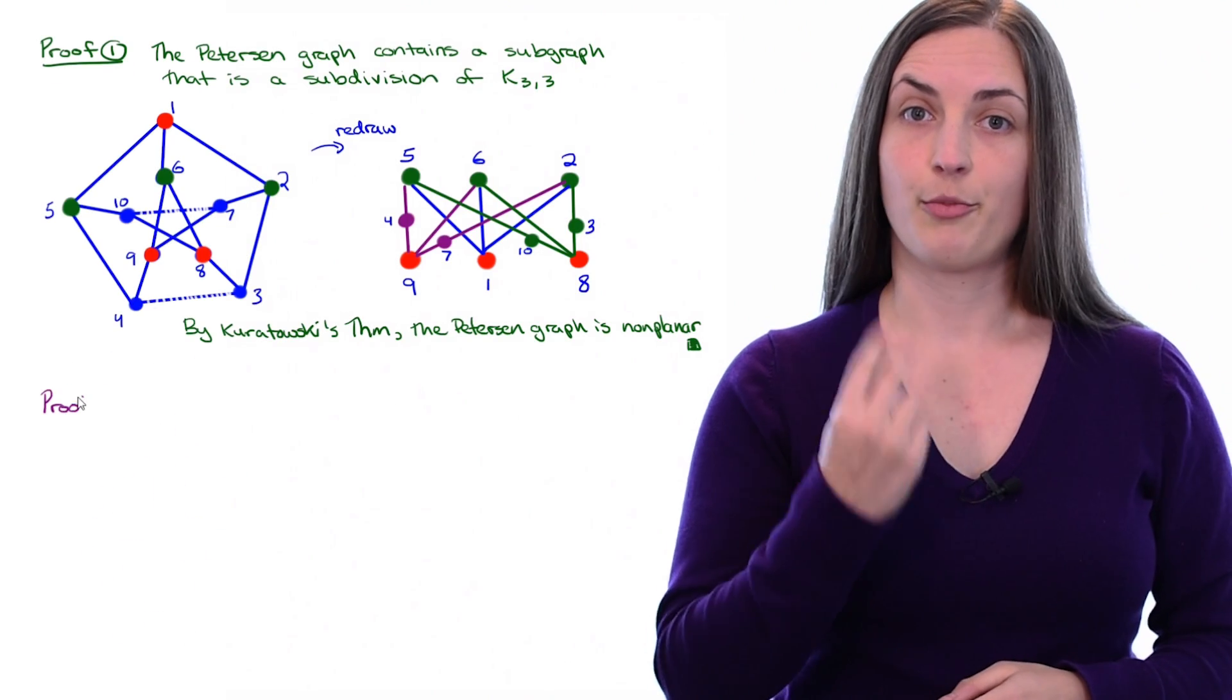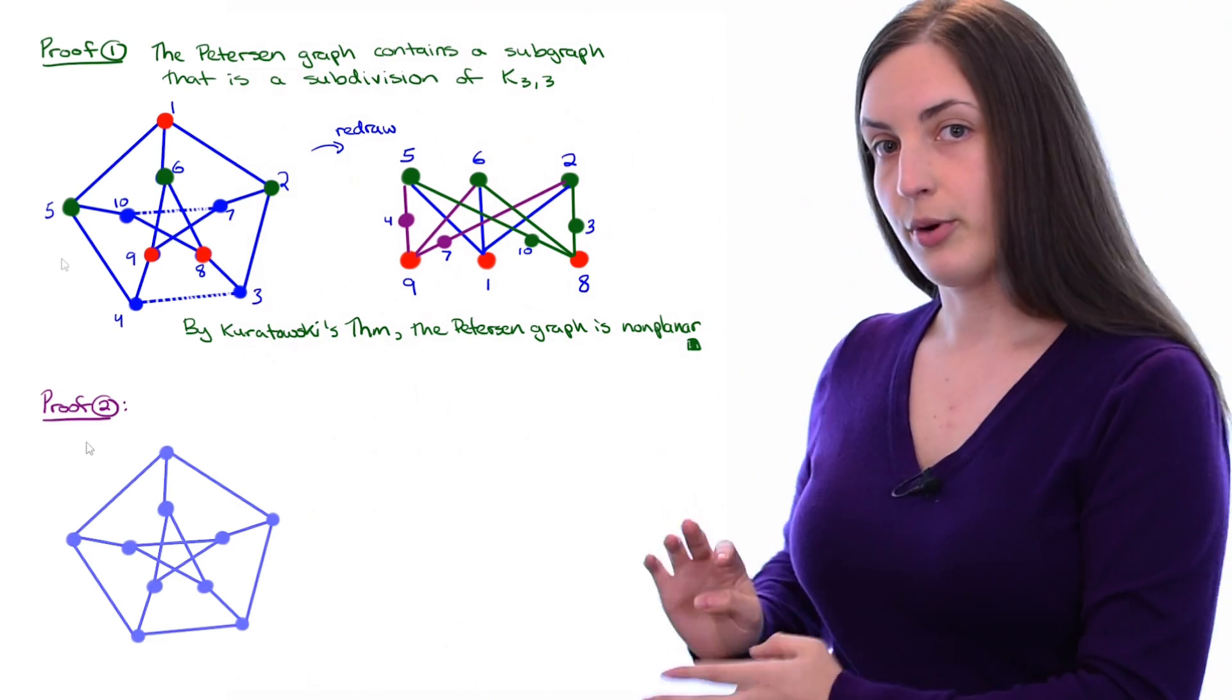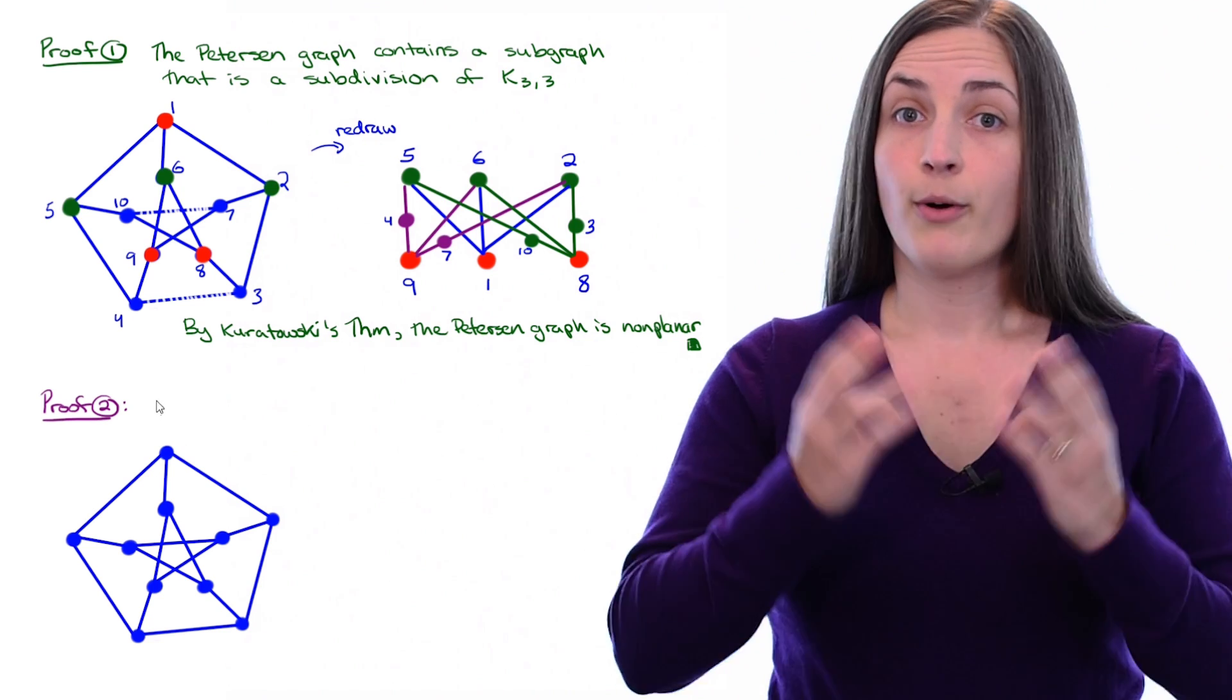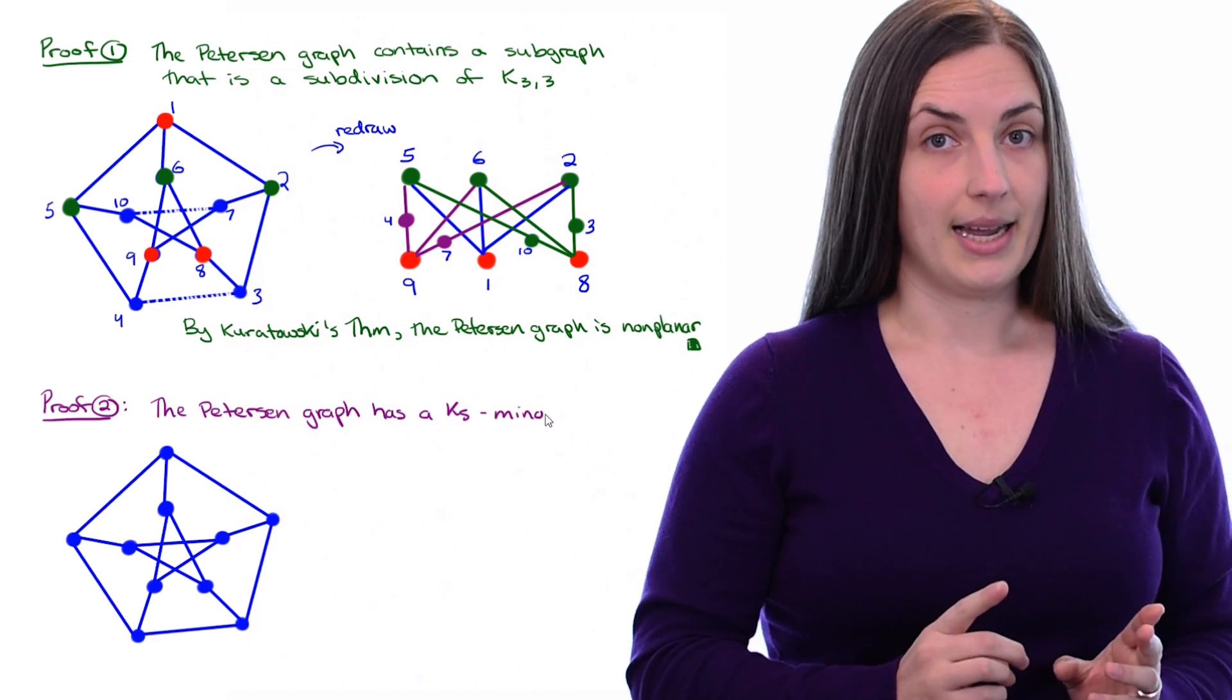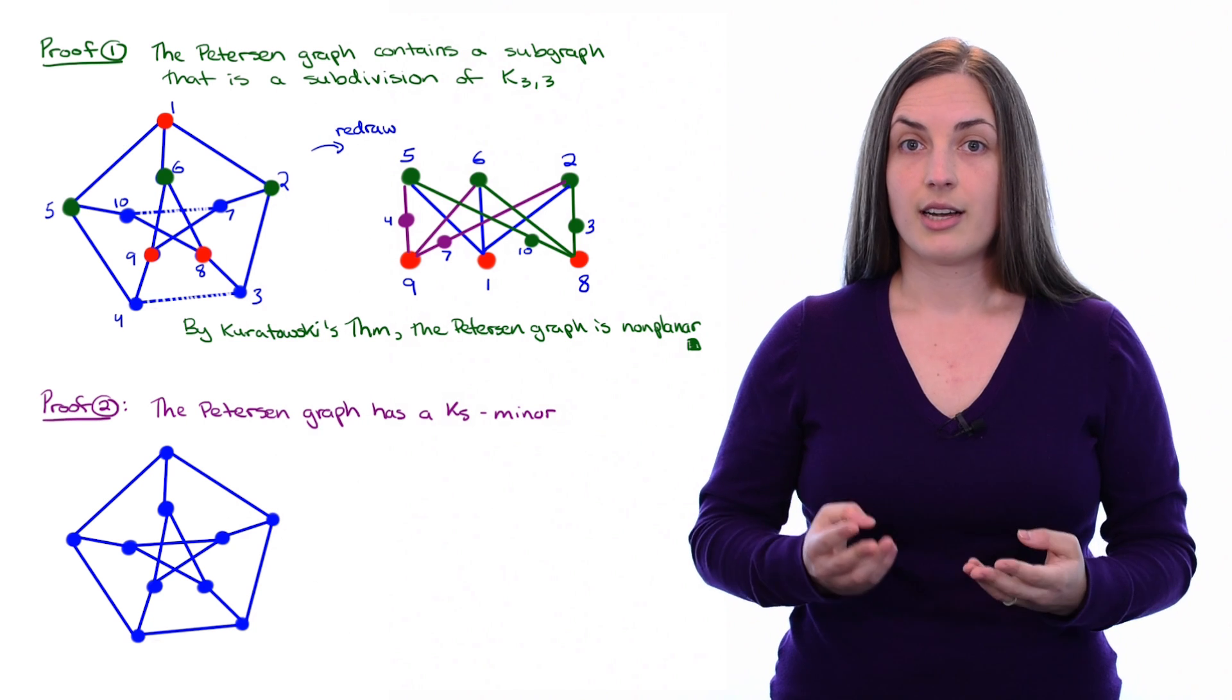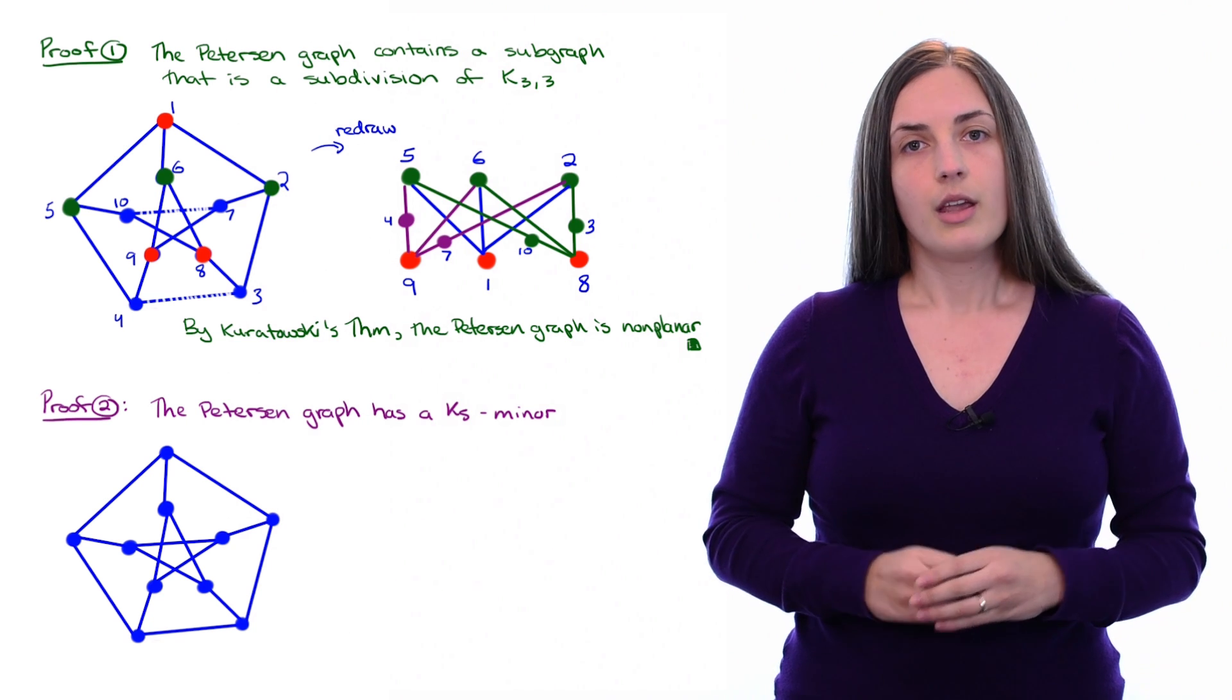Now let's start a second proof. So first I'll redraw the Peterson graph, and the point here is to show that the Peterson graph has a K₅ minor. In other words, we're going to use Wagner's theorem in this proof. Now how do we do that?